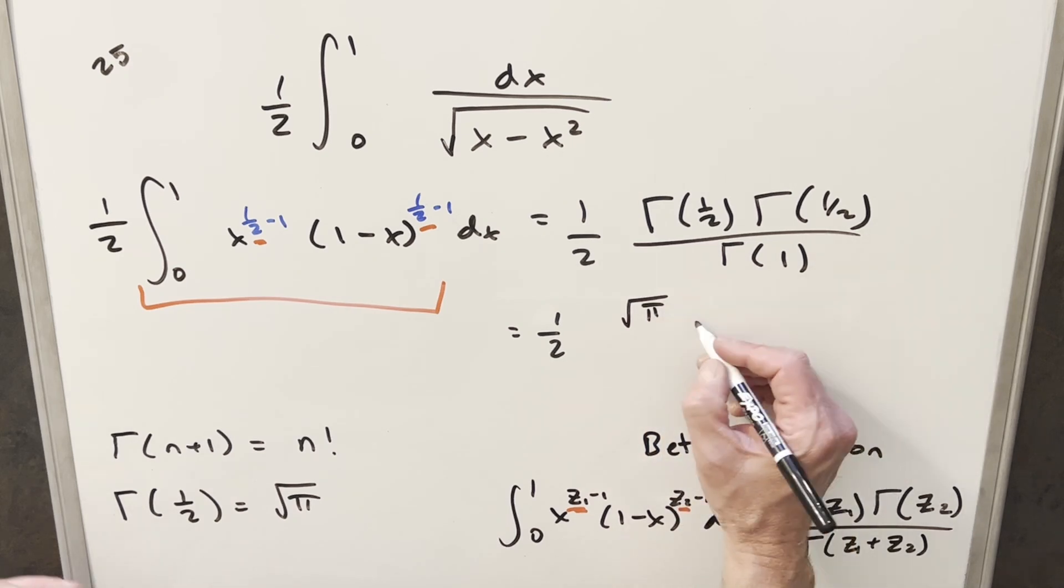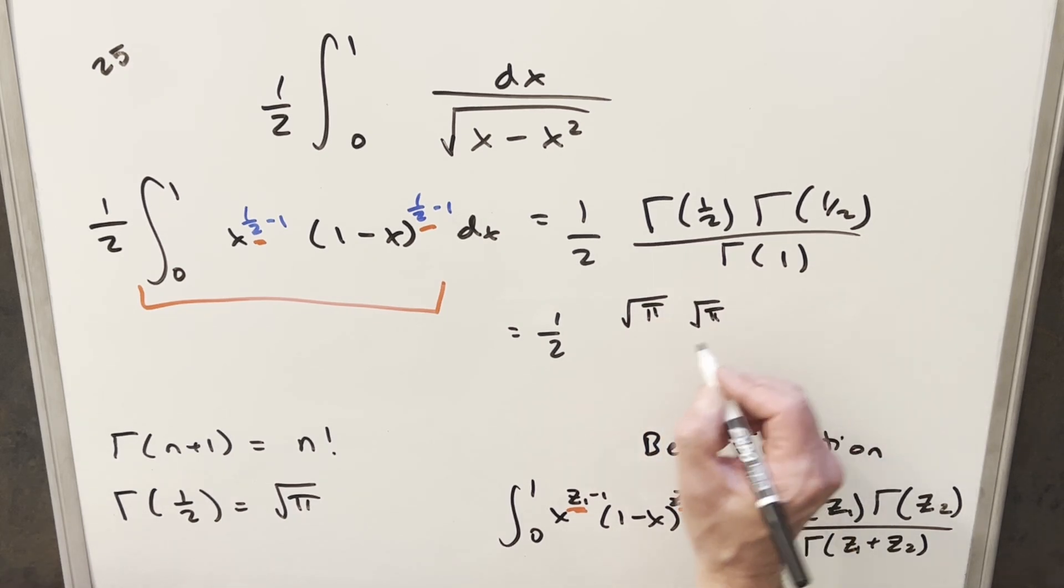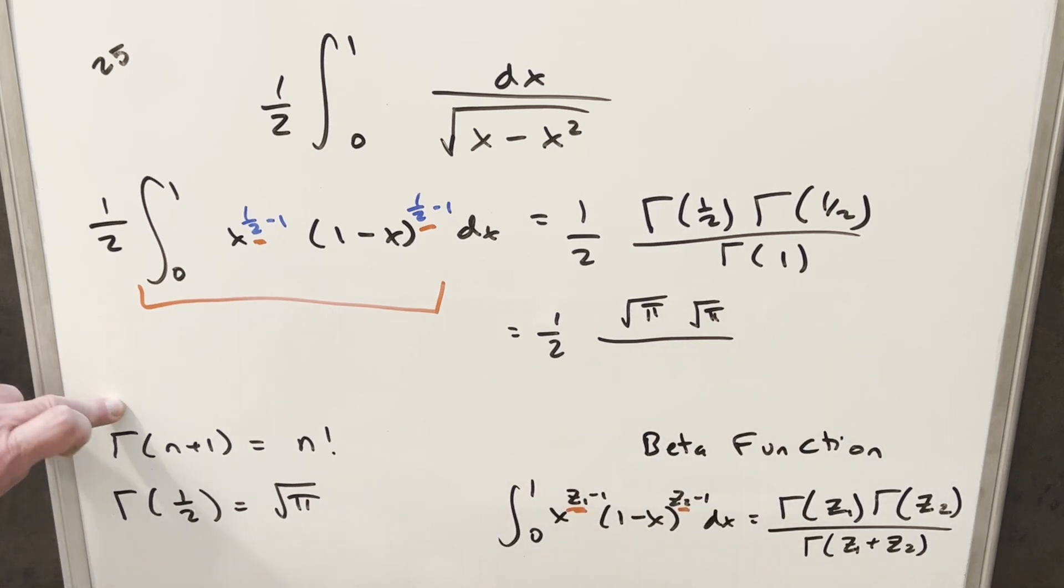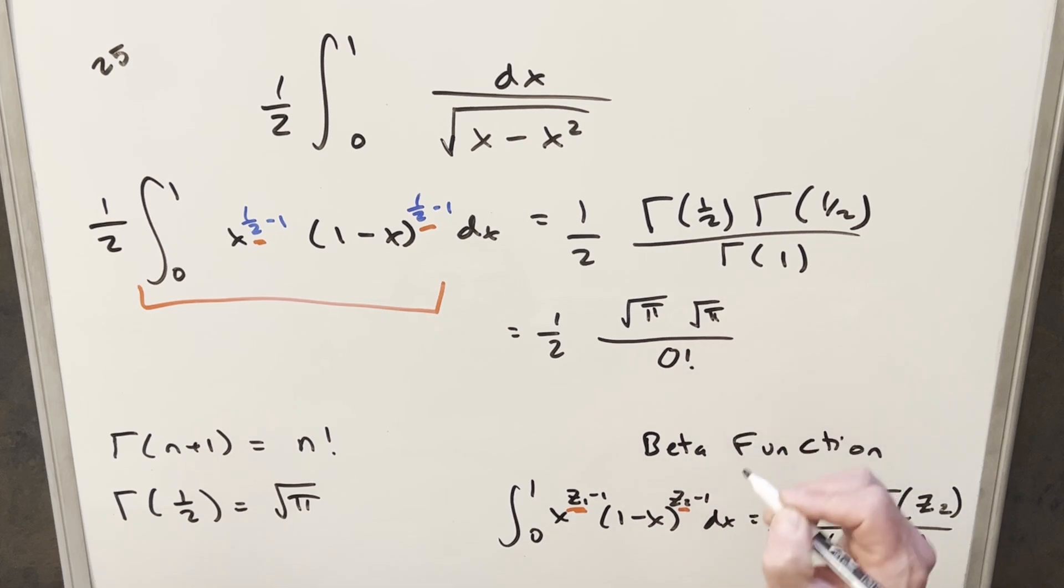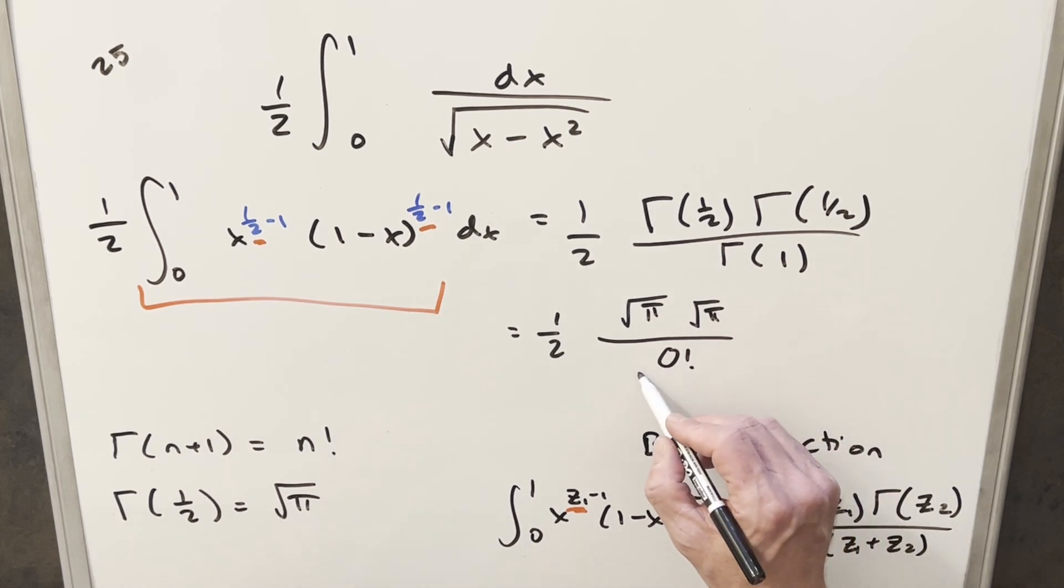And same thing here. This is going to be square root of pi. And this is going to be all over gamma of 1. For this, what we'll use is this formula that says gamma of n plus 1 is just n factorial. So for gamma of 1, I can write this as 0 factorial. But 0 factorial is just 1.